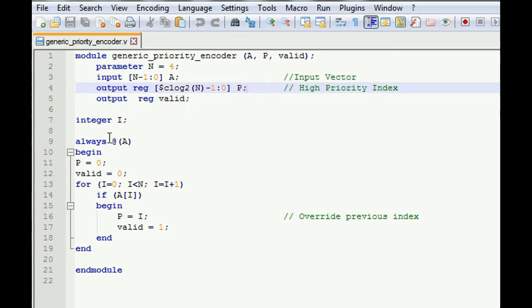Now how we write the code? We will use a simple always block. Firstly, P will be 0 and valid will be 0. Now there is a for loop in which I variable varies from 0 to n and it will increment by 1.